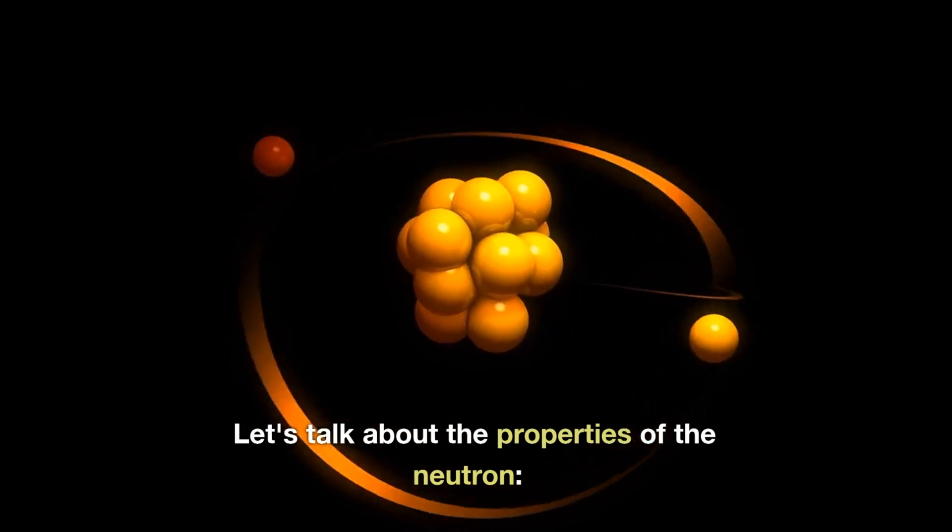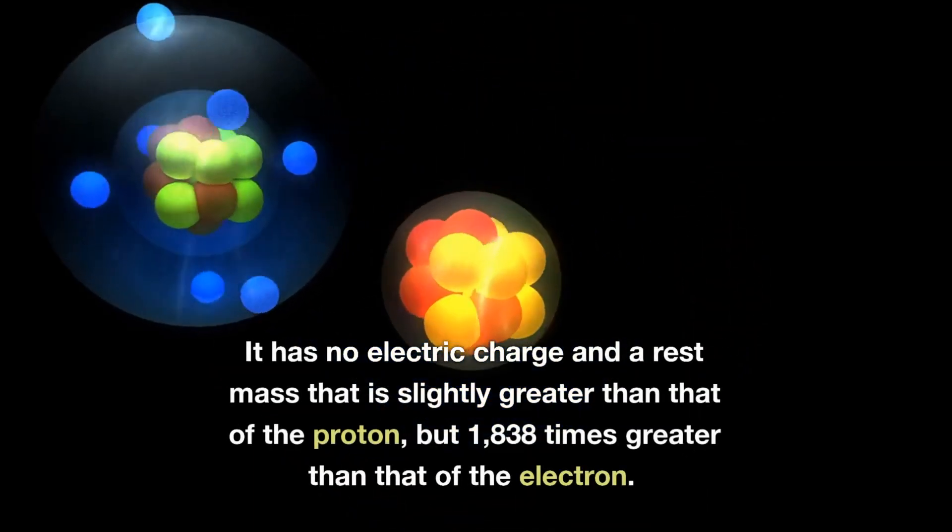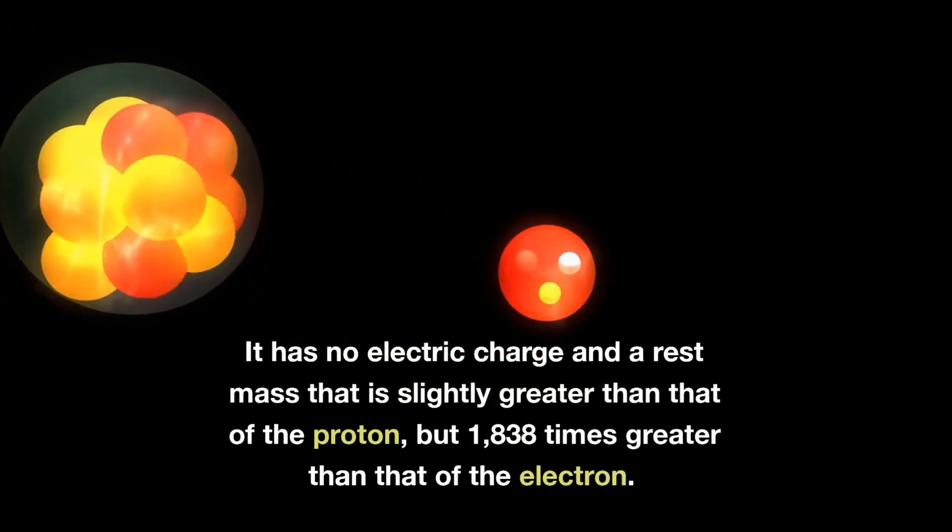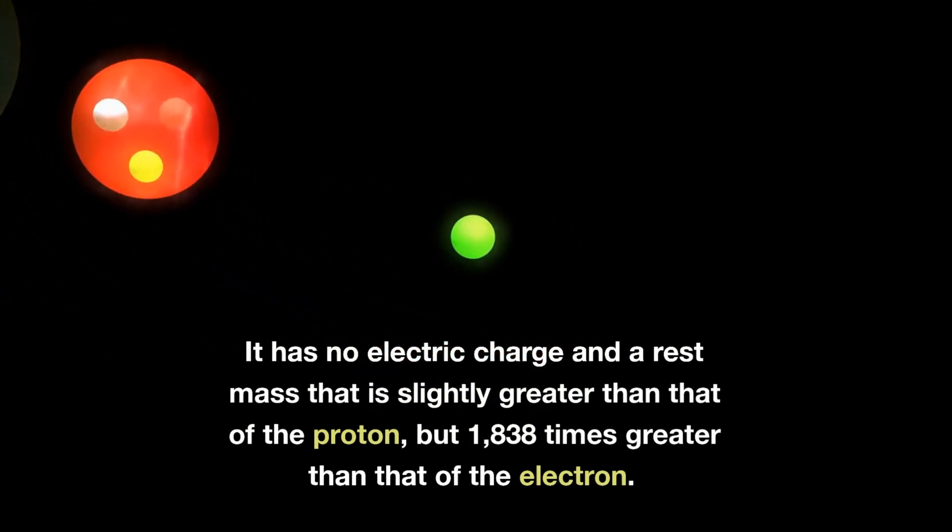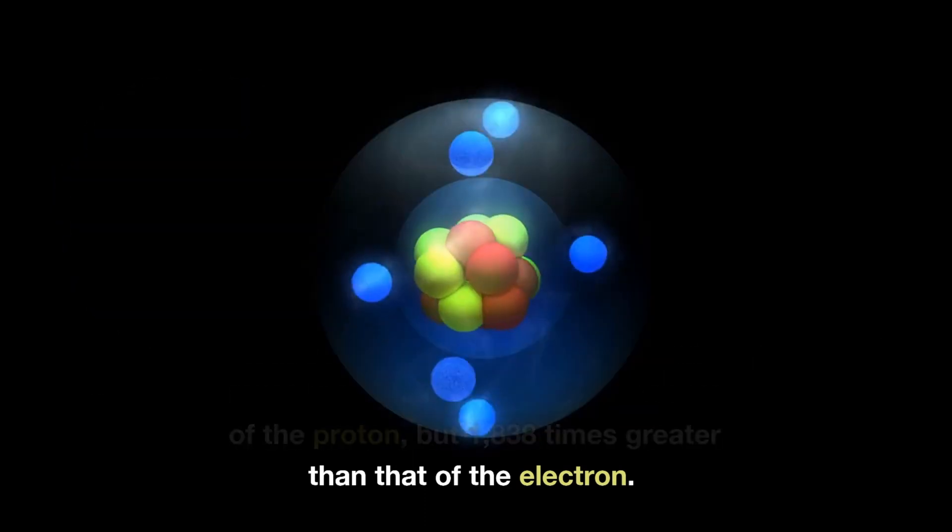Let's talk about the properties of the neutron. It has no electric charge and a rest mass that is slightly greater than that of the proton, but 1,838 times greater than that of the electron.